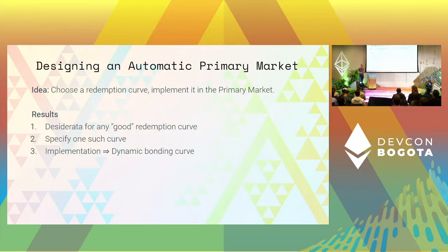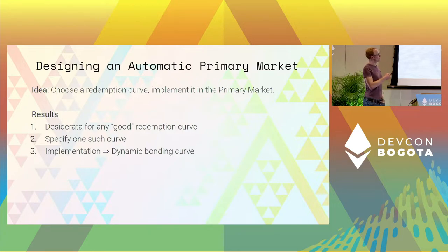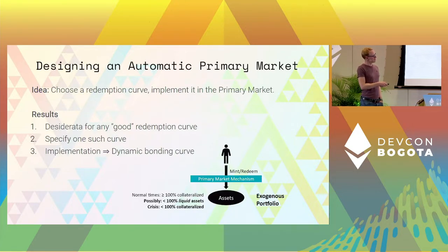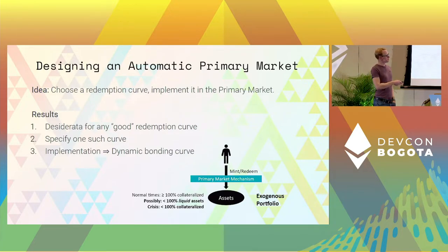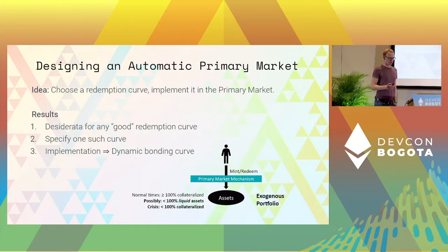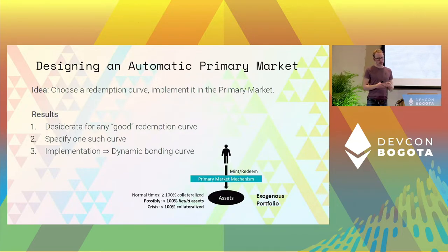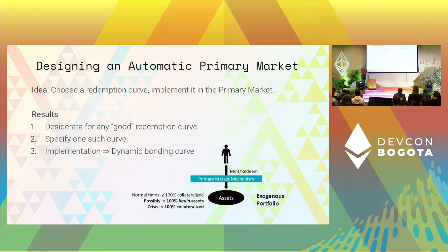The basic idea I want to talk about today is: maybe we should think about the redemption curve as a design problem. Maybe we should choose a redemption curve that we think is useful and reasonable, and then go and implement that in our primary market maker. I'm going to give you results in three parts: first, what are the desiderata for a good redemption curve; second, one such curve that satisfies the desiderata; and third, how to actually implement that. The redemption curve assumes no market condition changes over time, and the step from picking a curve to implementing it is making it dynamic — leading to this type of dynamic bonding curve.